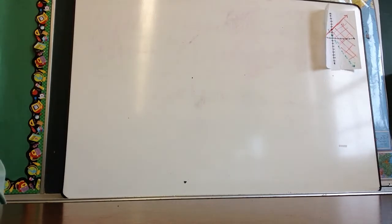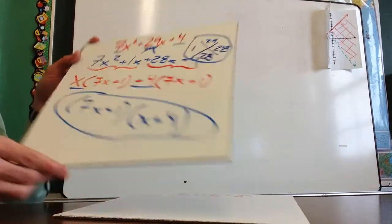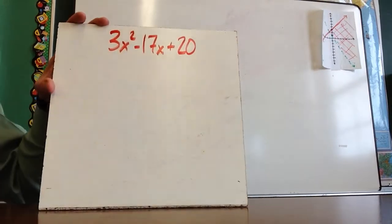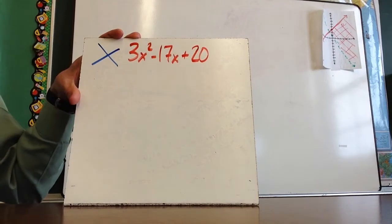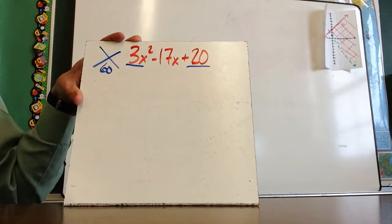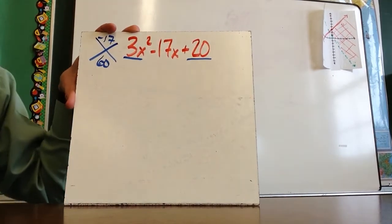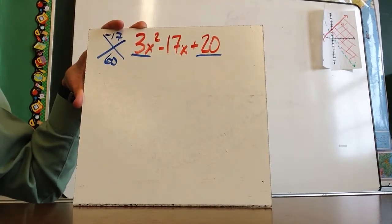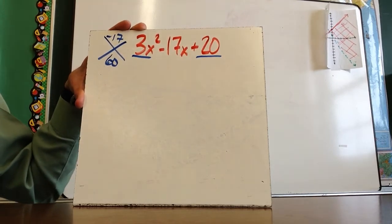That's one example of a problem. Let's take a look at a second type. You'll notice that in this first example everything was positive, but here the middle number is now negative. Again, I'm going to create my X — I'll do it on this side just to show it doesn't matter which side I put it on. This is going to be 3 times 20, which gives me positive 60. And then in the middle, I need a negative 17. So it gets a little trickier — I need two numbers that when multiplied together give me positive 60, yet when added together will give me a negative 17.